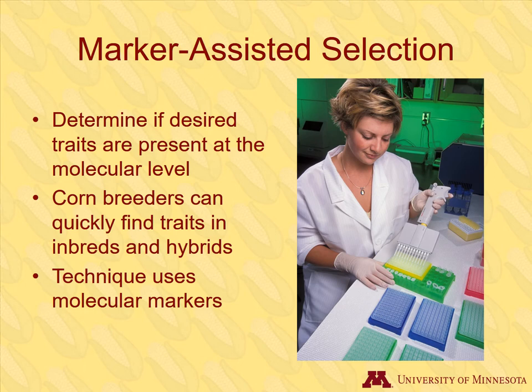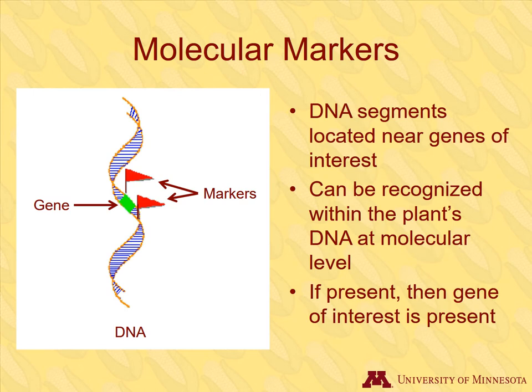Another biotechnology approach is to use marker-assisted selection, which determines if desired traits are present at the molecular level. Marker-assisted selection helps corn breeders by quickly and efficiently determining if genes or traits are present in newly created inbreds and hybrids. In this technique, segments of DNA called molecular markers are used. Molecular markers are pieces of DNA located near genes or traits of interest. Molecular methods are used to detect these markers within a plant's genome — if they're present, then the genes or traits are also present.